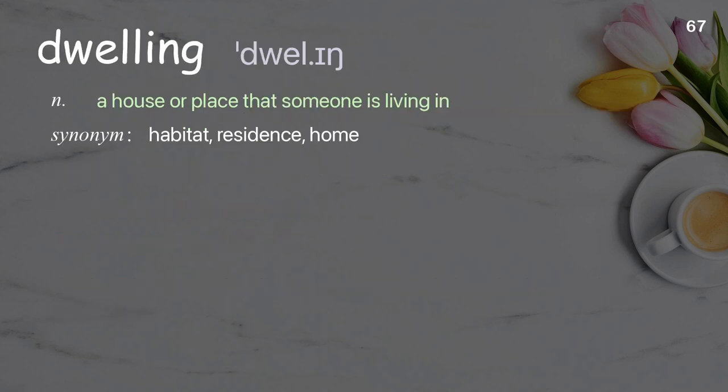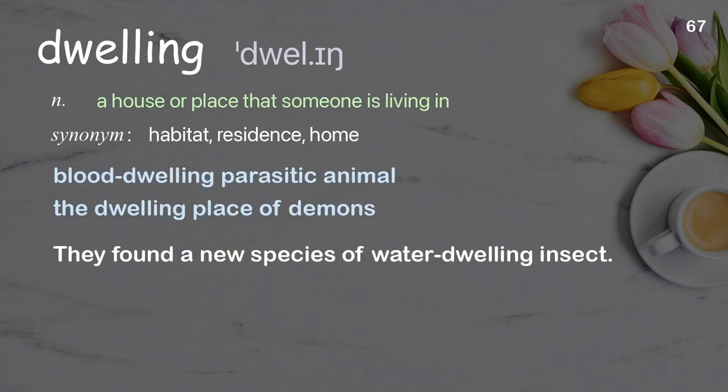Dwelling. A house or place that someone is living in. Examples: Blood-dwelling parasitic animal, the dwelling place of demons. They found a new species of water-dwelling insect.